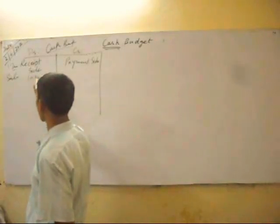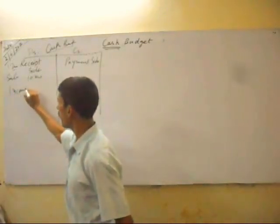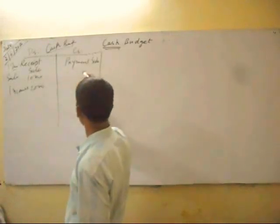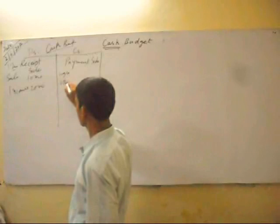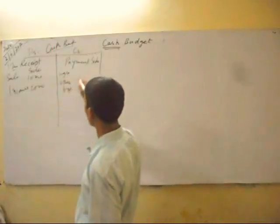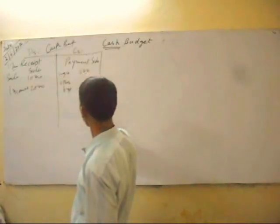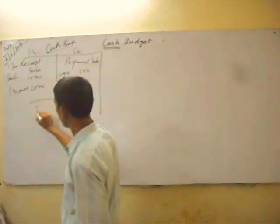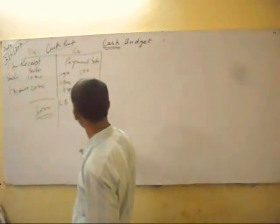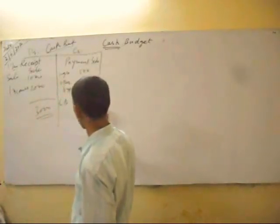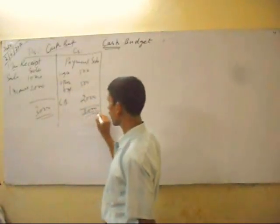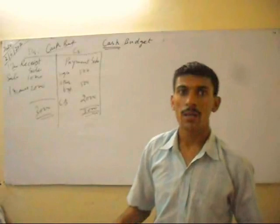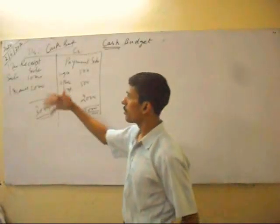For example, sales is one thousand, other incomes is two thousand, and payments of wages and other expenses are five hundred each. So the closing balance is two thousand. This is the historical data — we sell goods to other persons.